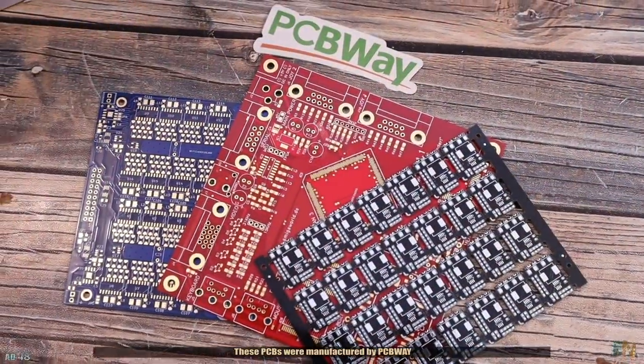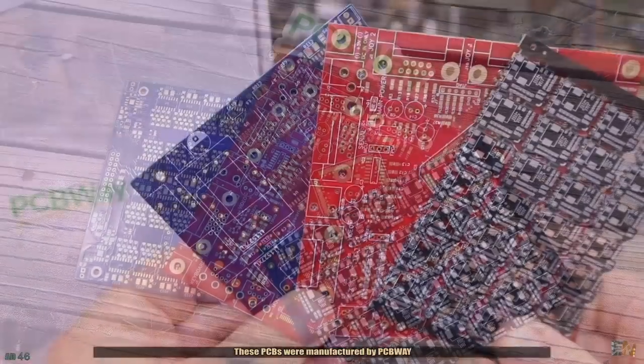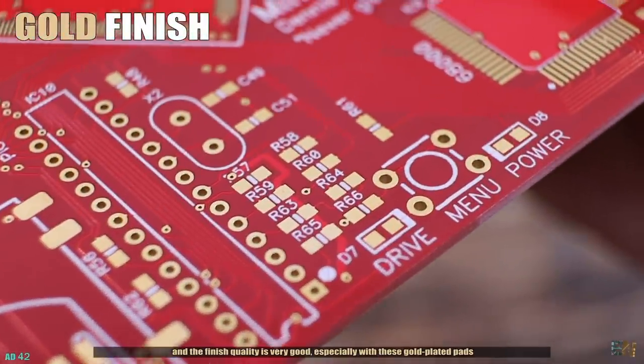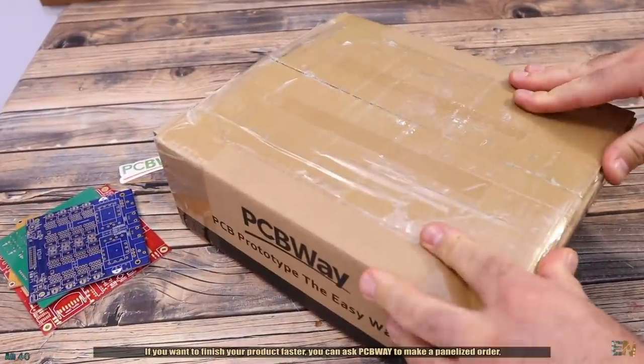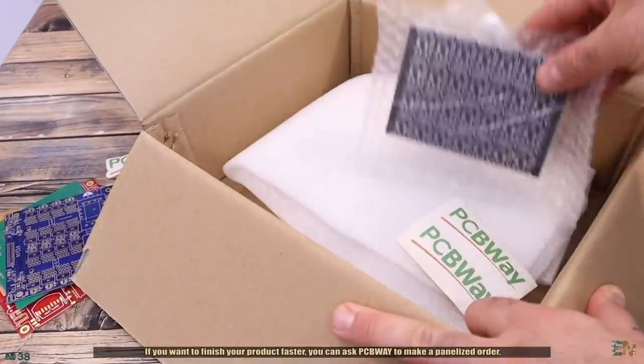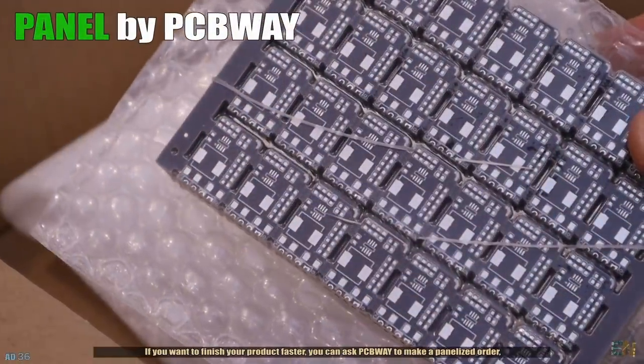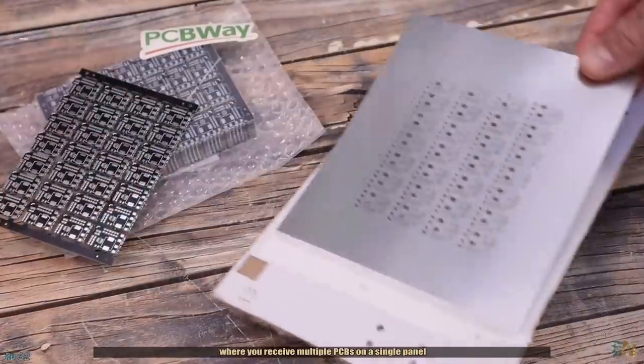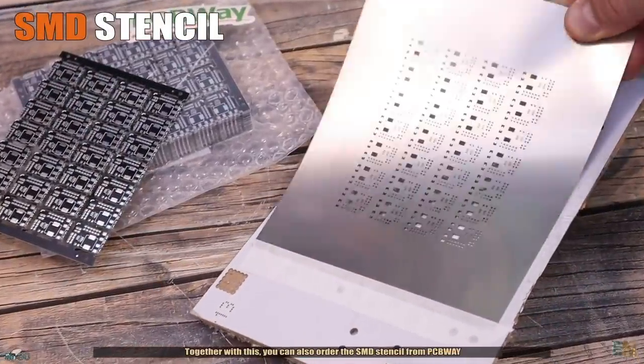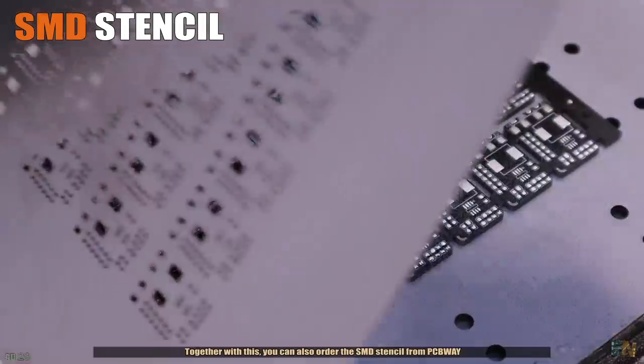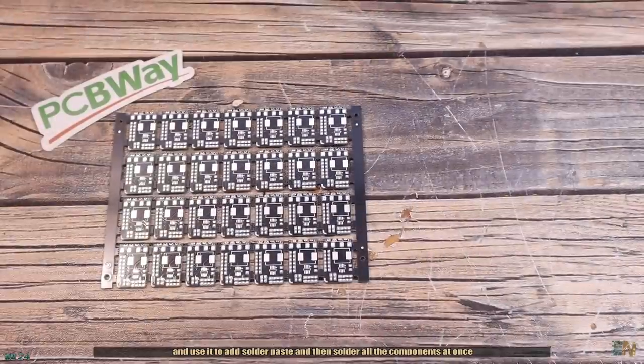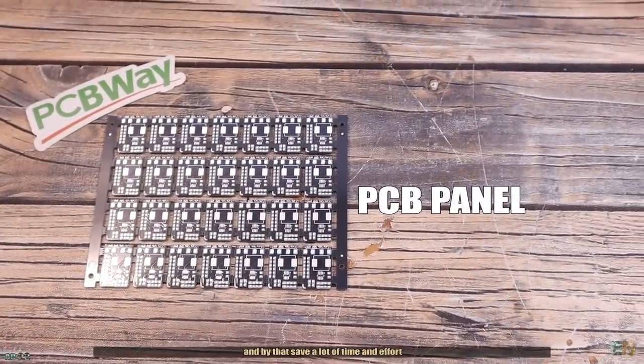These PCBs were manufactured by PCBWay and the finish quality is very good, especially with these gold plated pads. If you want to finish your product faster, you could also ask PCBWay to make a panelized order where you receive multiple PCBs on a single panel. Together with this, you can also order the SMD stencil from PCBWay and use it to add solder paste and then solder all the components at once and by that you save time and effort.